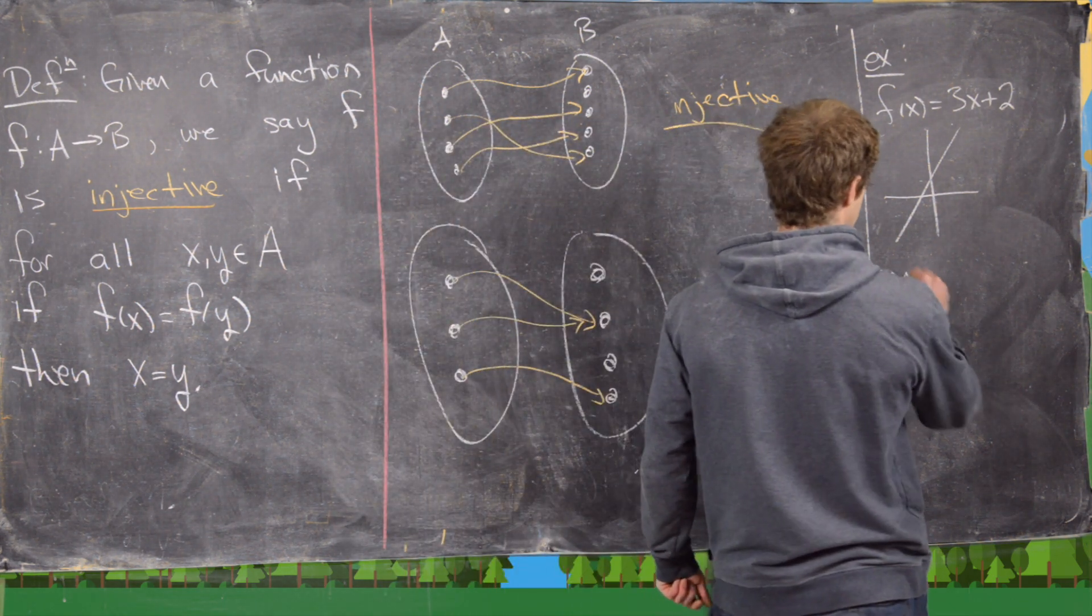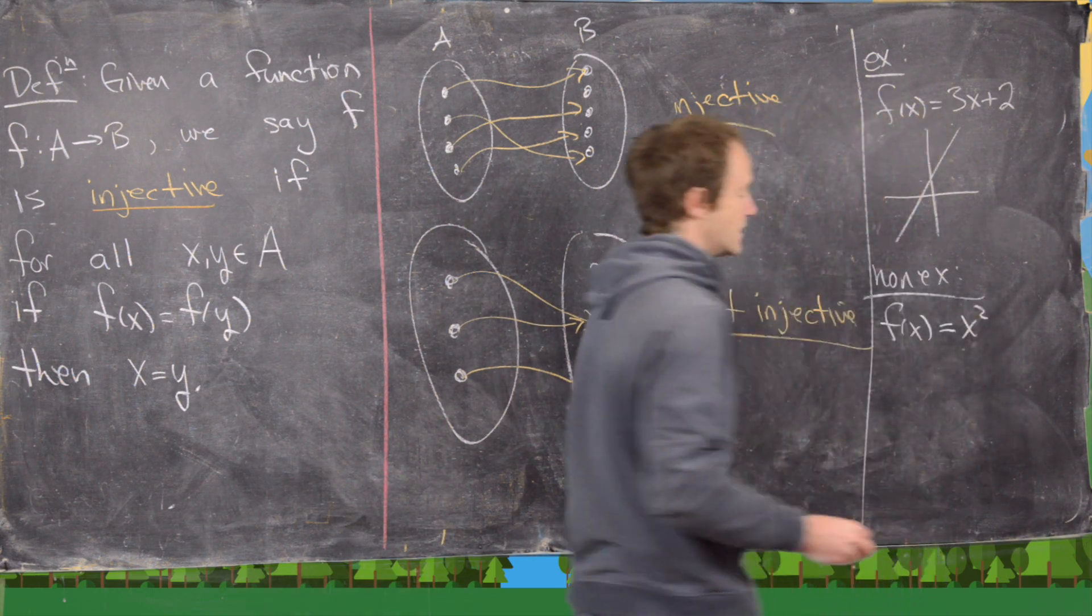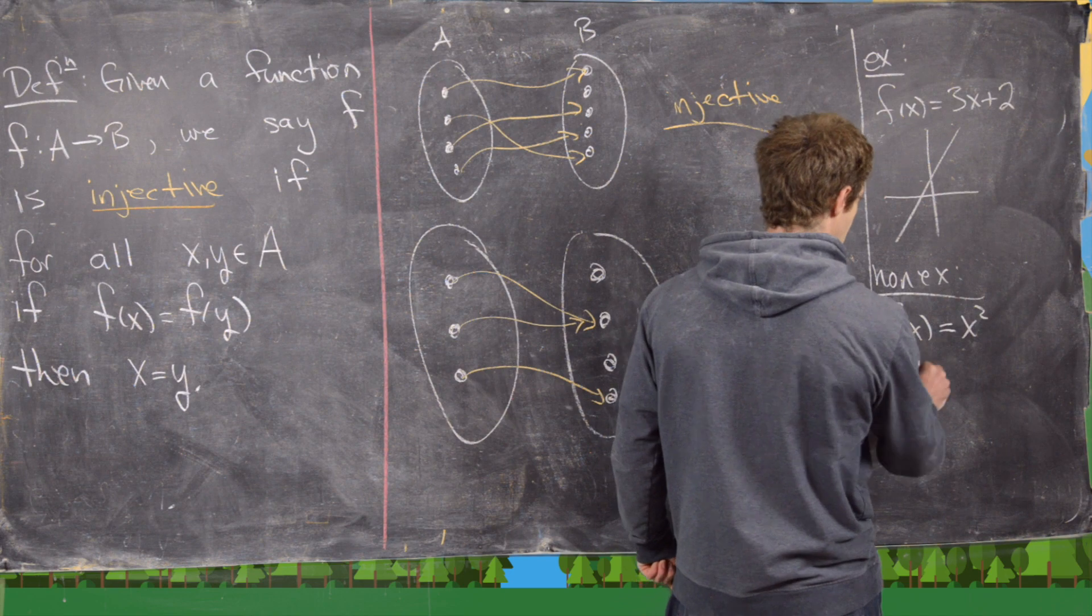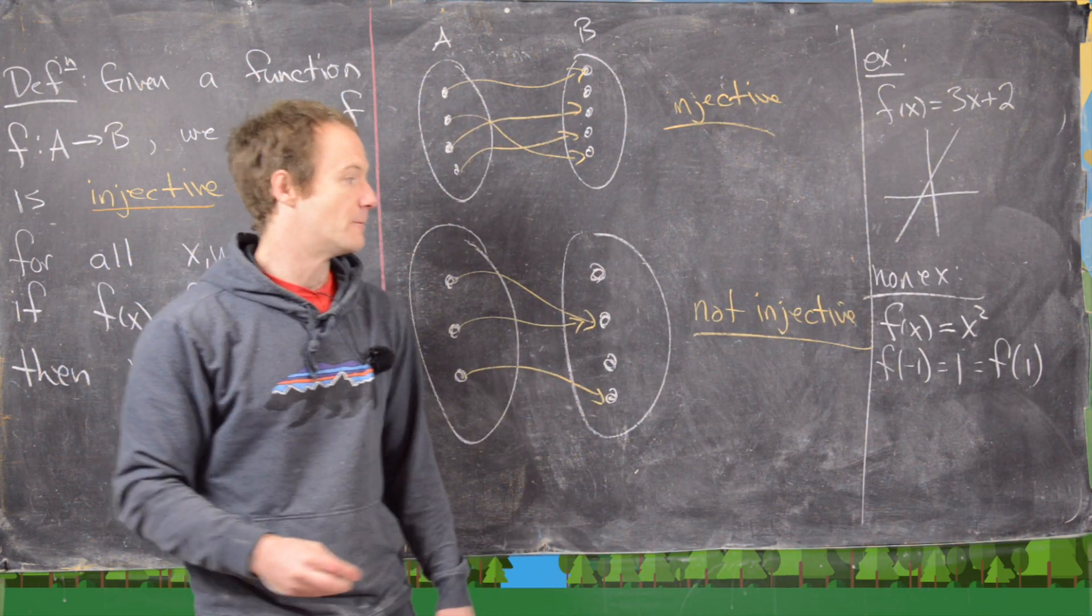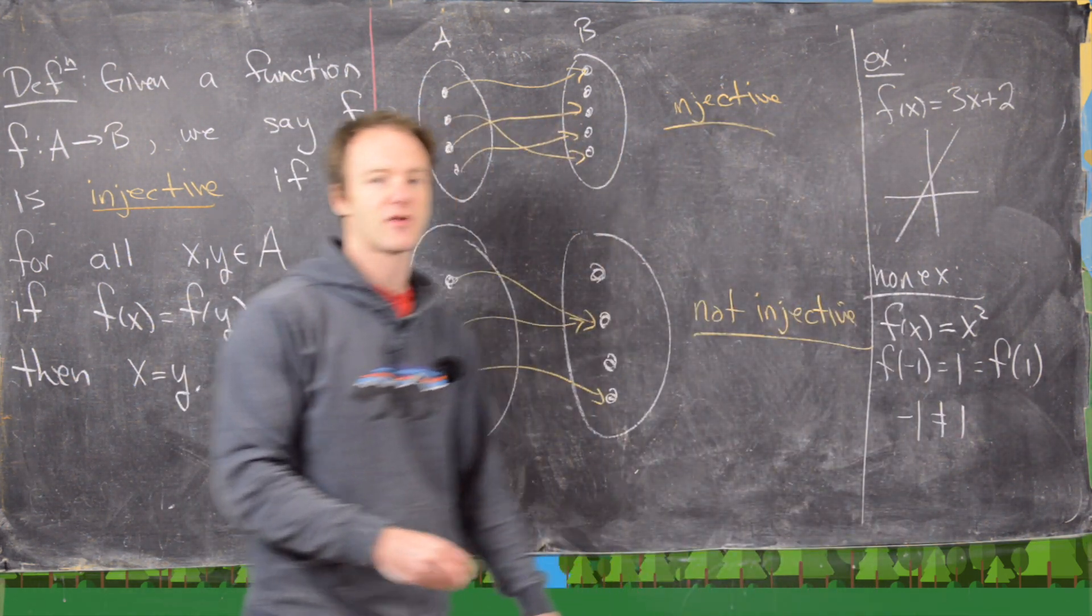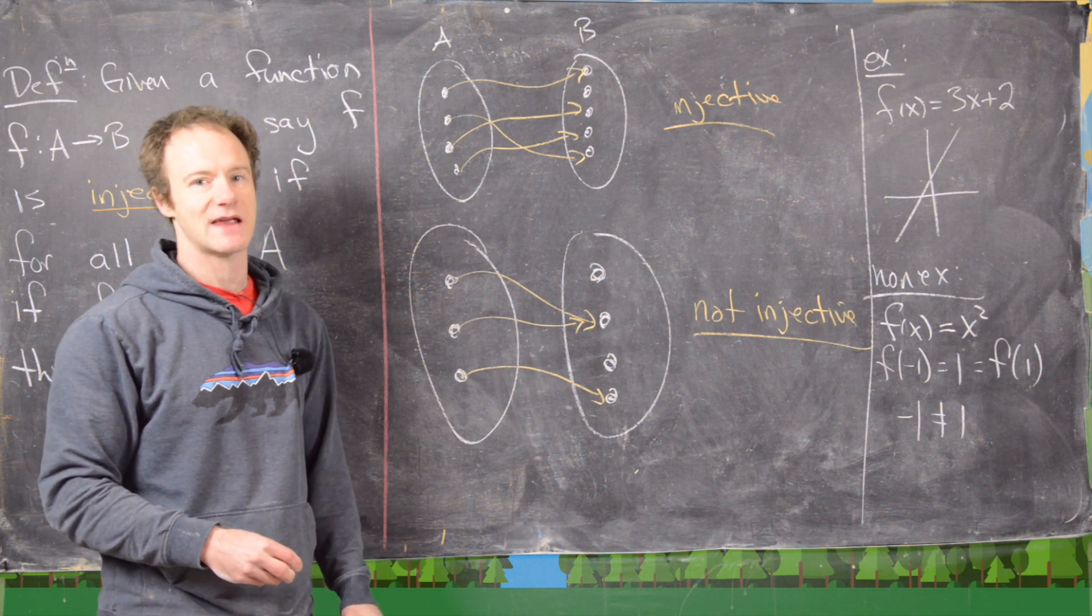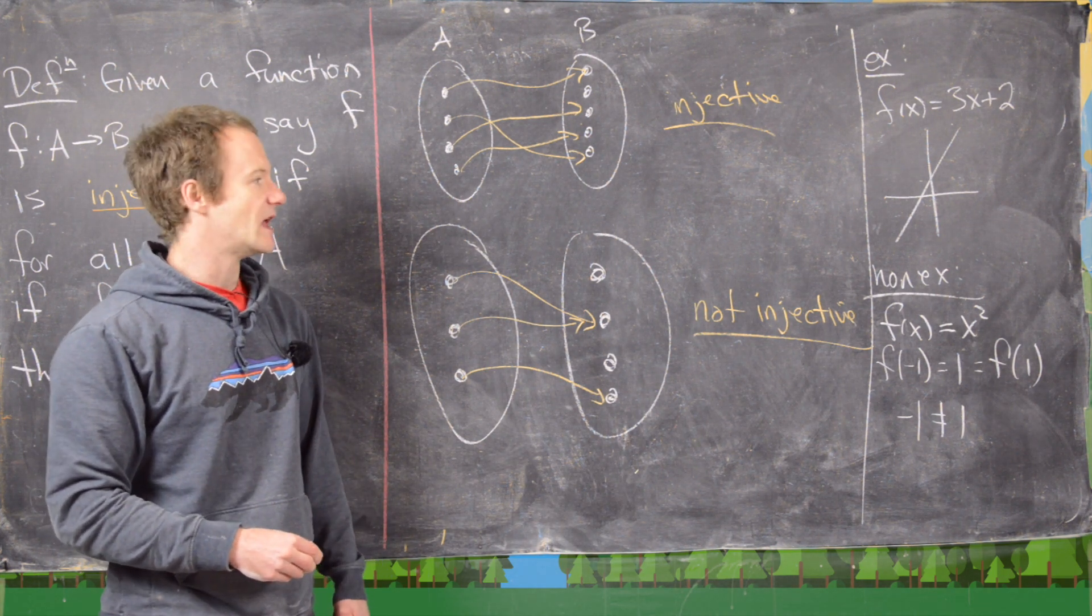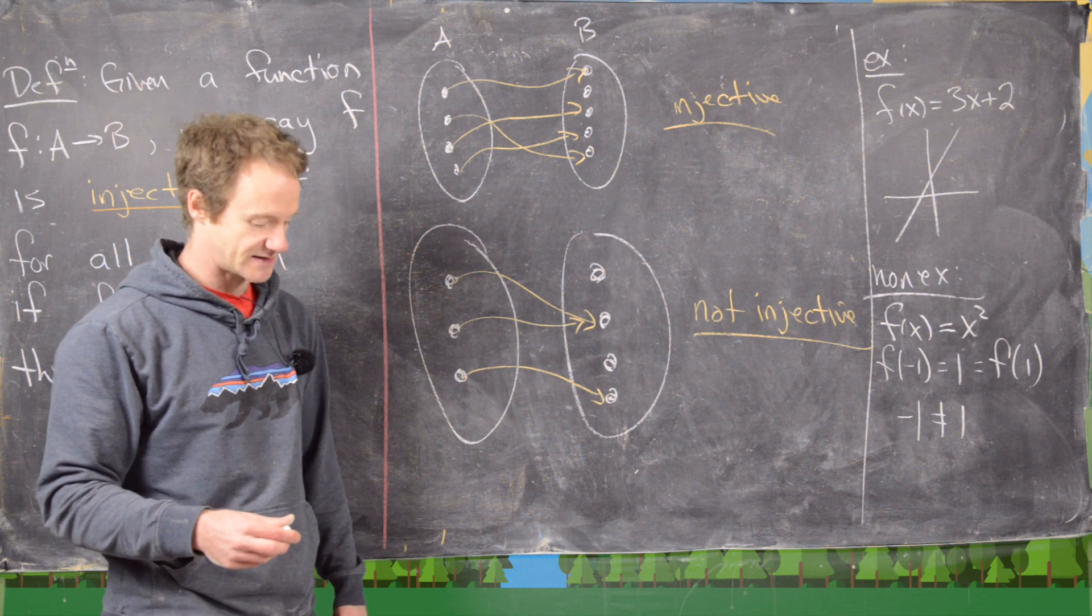But maybe some non-examples would be f of x equals x squared. And that's obvious because notice if we take f of negative 1, we get 1, which is the same thing as f of 1. But negative 1 is not equal to 1. In other words, we have two elements of the domain which are different, which are mapped to the same element of the range. I'm going to clean up the board, and then we'll look at an outline for a proof of proving something is an injective function.